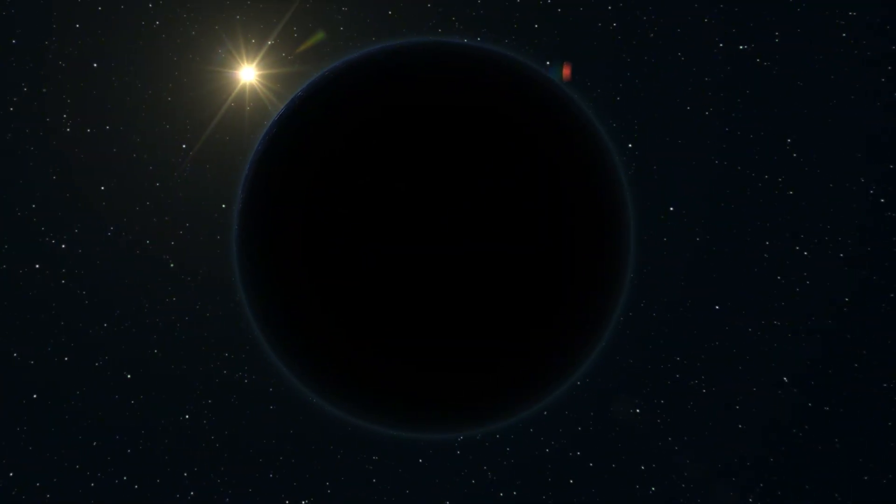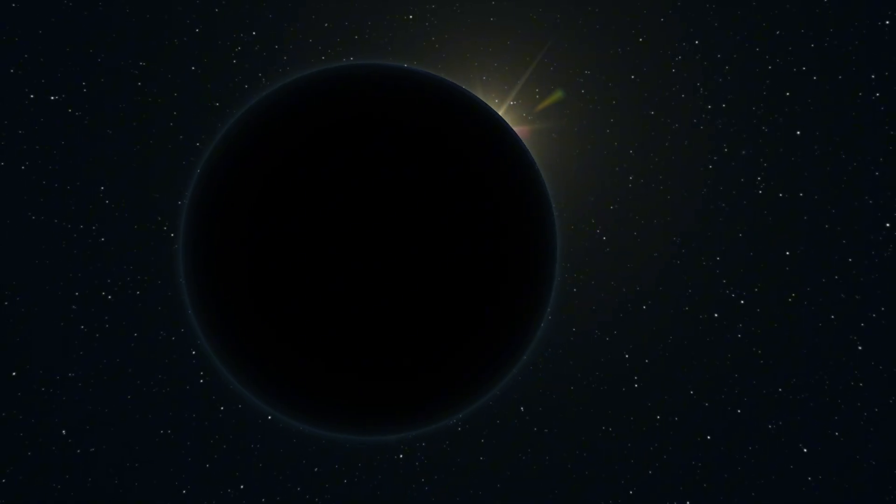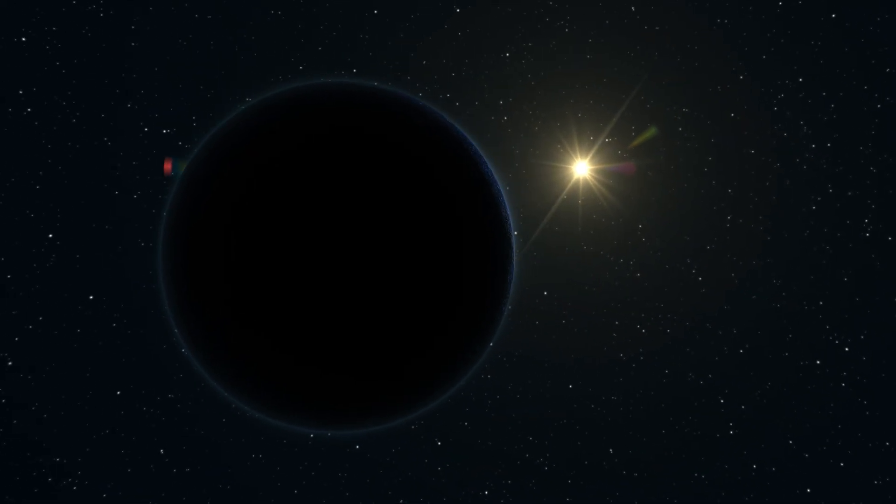Rogue planets are nearly invisible. We'd only detect one if it passed close enough. And by then, there might be nothing we could do.